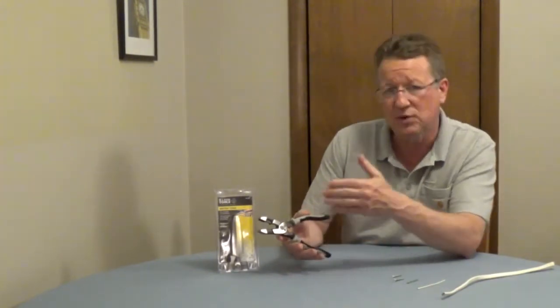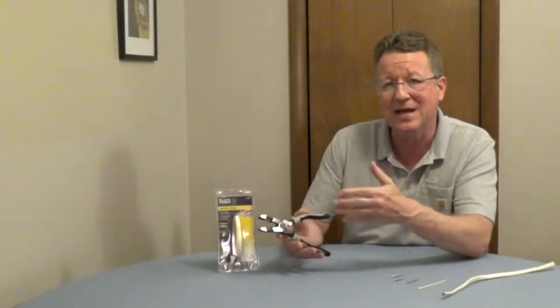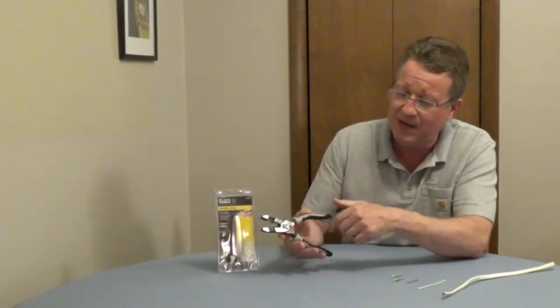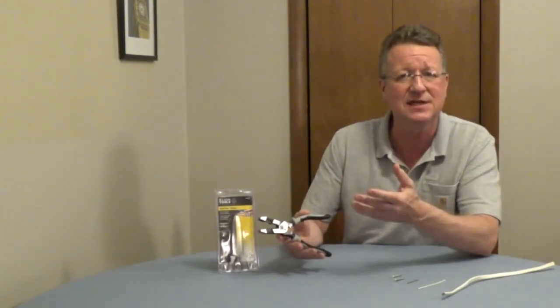The shears will cut down 6-32 and 8-32 bolts, and you have a crimping station for uninsulated connectors.